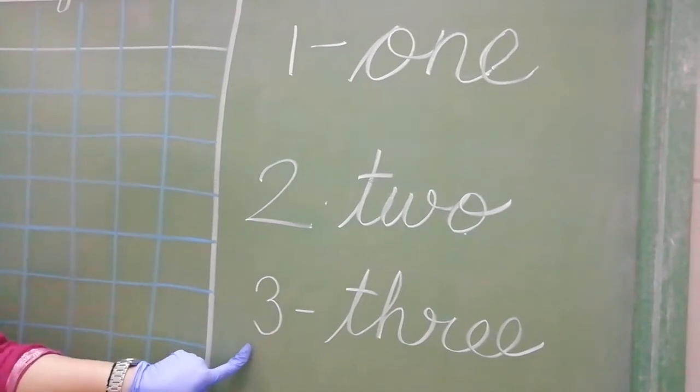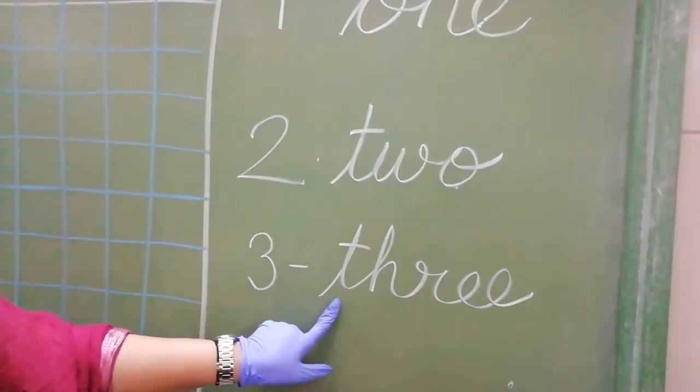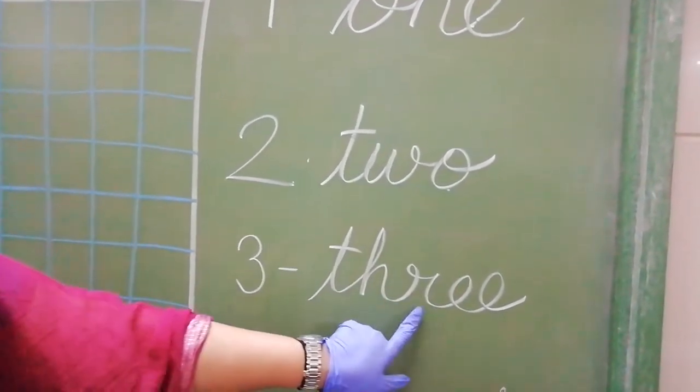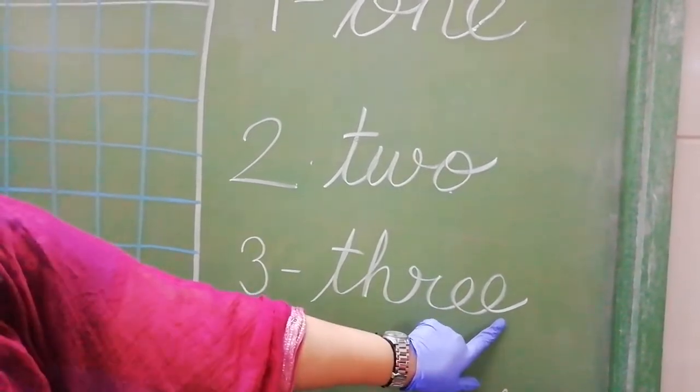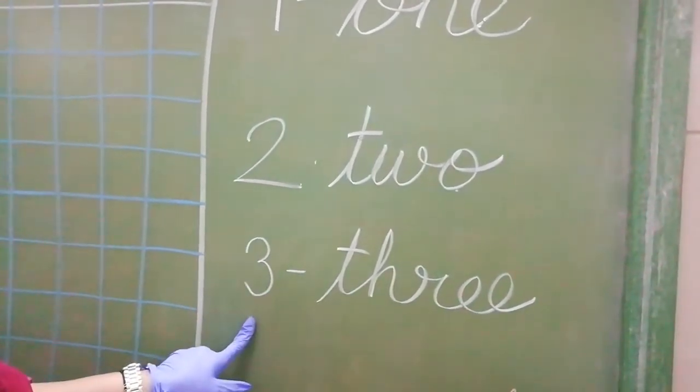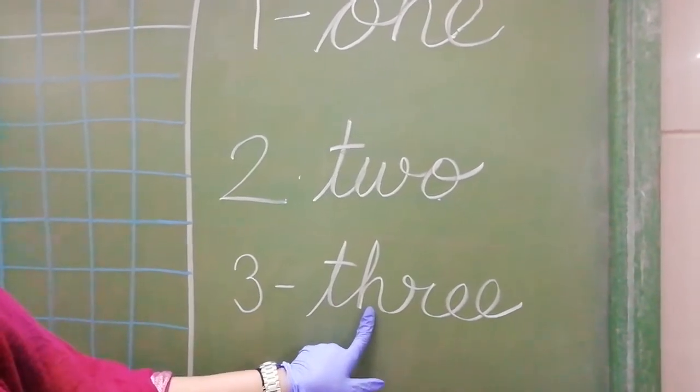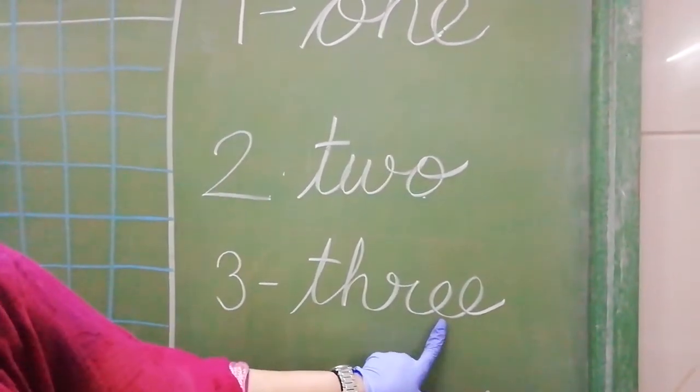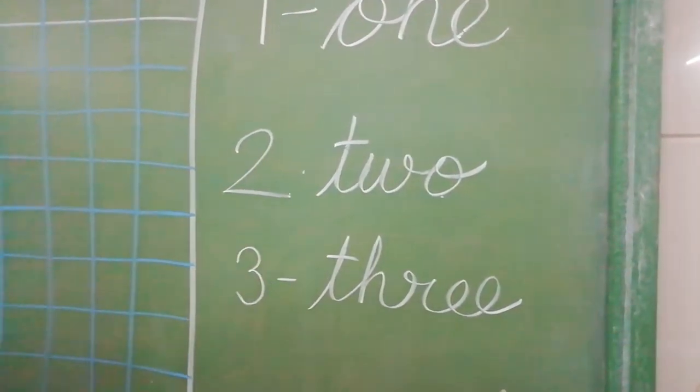This is number 3. Spelling of 3 is t-h-r-e-e, 3. Spelling of 3 is t-h-r-e-e, 3.